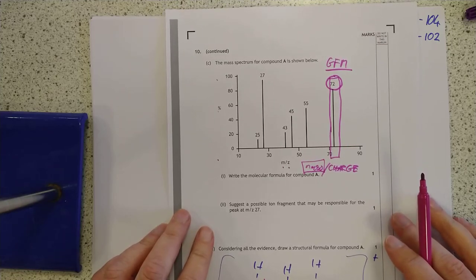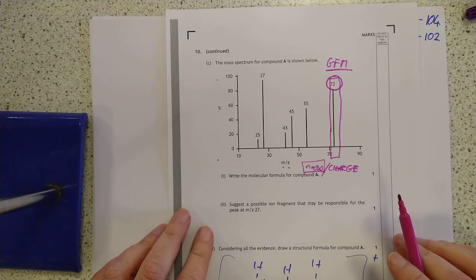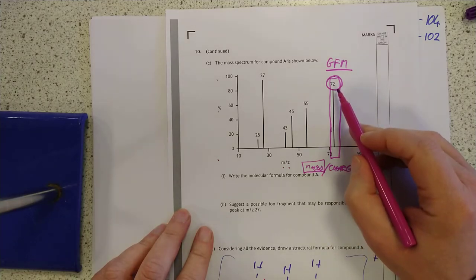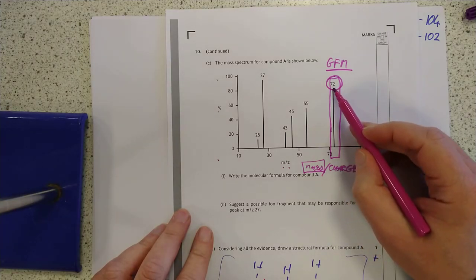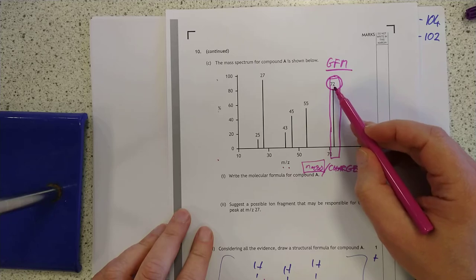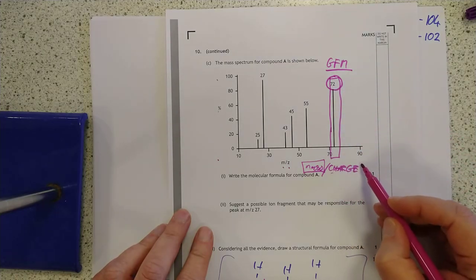And also, they don't ask it very often, but you can have a 2 plus charge. So in theory, you should also get perhaps peaks at 36, which of course is the whole molecular ion, just divided by a charge of 2 here.